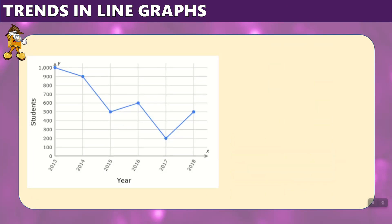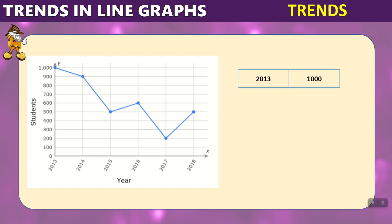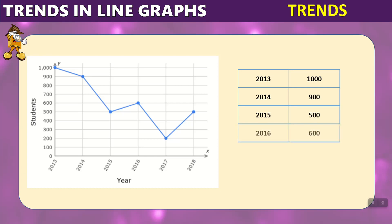In this line graph we have students over several years. We can see how the numbers are trending down or up. In 2013, there were 1000 students. In 2014, there were 900. In 2015, there were 500 — trending downward. 2016 is 600, going back up a little bit. 2017 is 200, a downward trend. And 2018 is 500, which is an upward trend again.